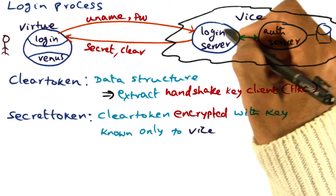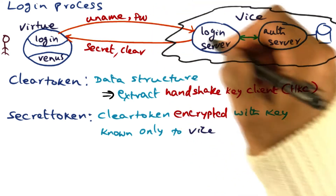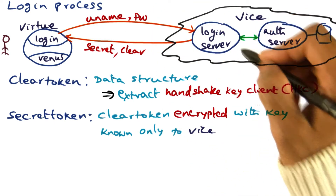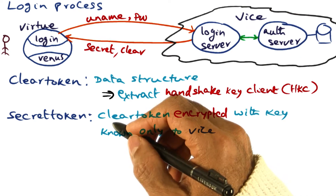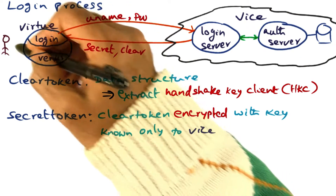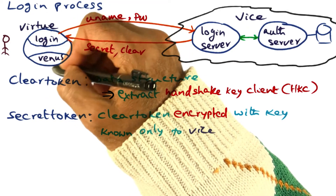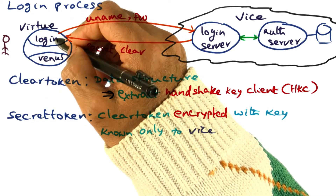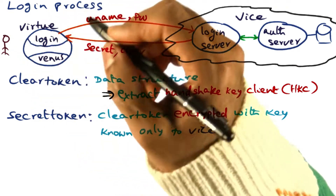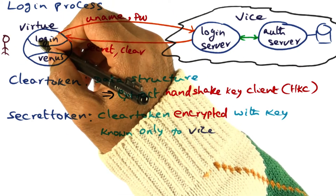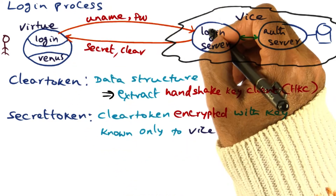The login server, once it authenticates who you are using the username and password, is going to send you a pair of tokens. Remember, all of this is happening on behalf of the user by the smarts in the Virtue workstation. The user has to do nothing special — all that the user is doing is logging in using a username and password. Under the covers, these things are happening.